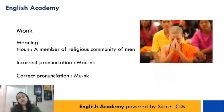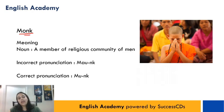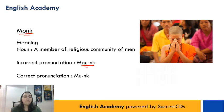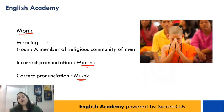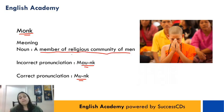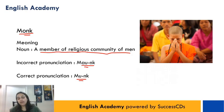The next word is M-O-N-K. Log usually isse pronounce karte hain 'monk', but iski correct pronunciation is 'monk'. Aur iska matlab hota hai a member of a religious community of men. Toh ek book hai 'The Monk Who Sold His Ferrari' — nahi 'monk', it is 'monk'.